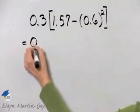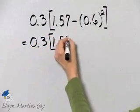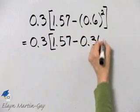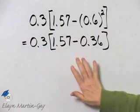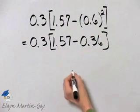This is 0.3 times 1.57 minus 0.36. Now where do we go next? We finish simplifying within this set of brackets, so we will subtract.